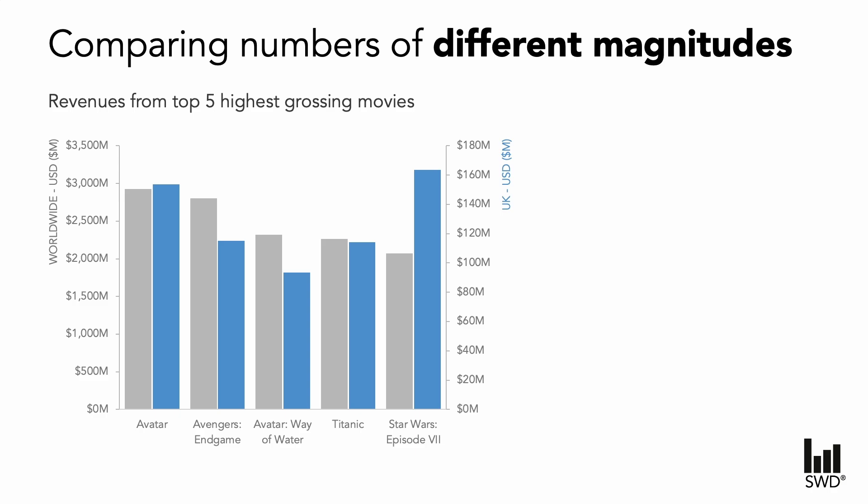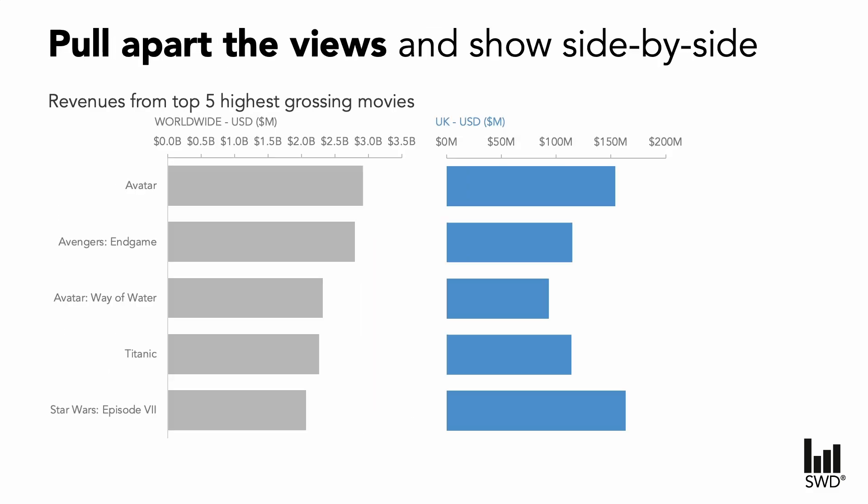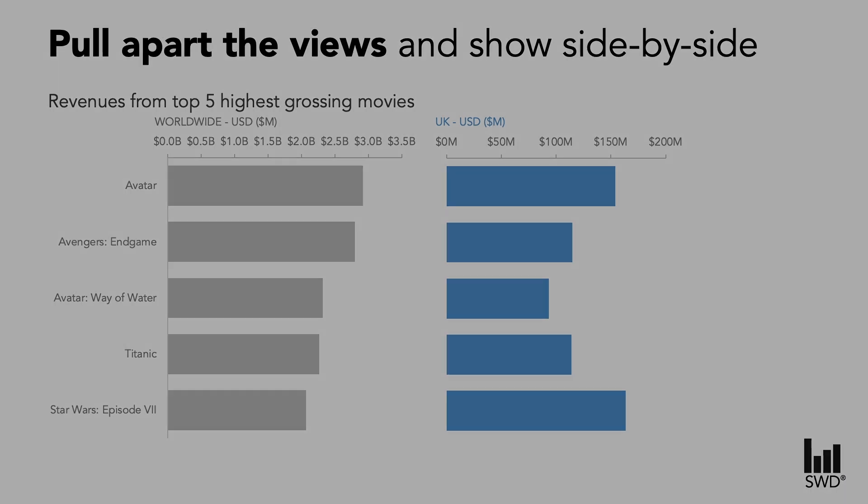When presented with this scenario, one alternative we can explore is to create two views and show them side by side with their own representative scales. We need to be careful with ensuring our axes are clearly labelled, but this view certainly removes the misleading comparison that we faced in the original.